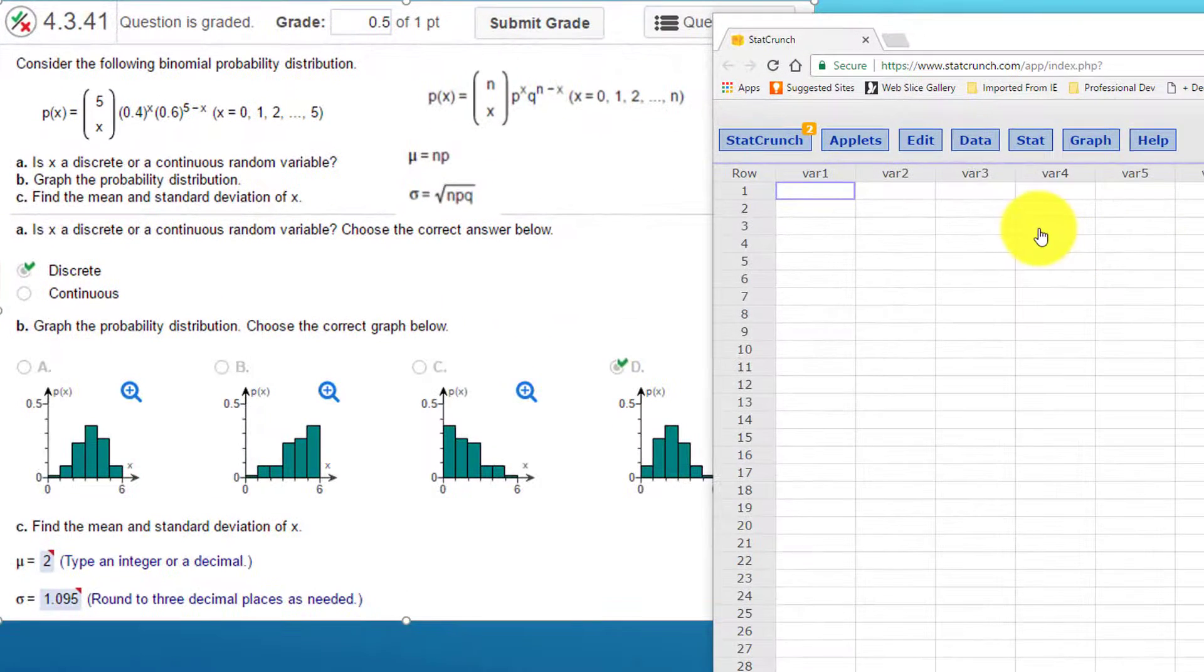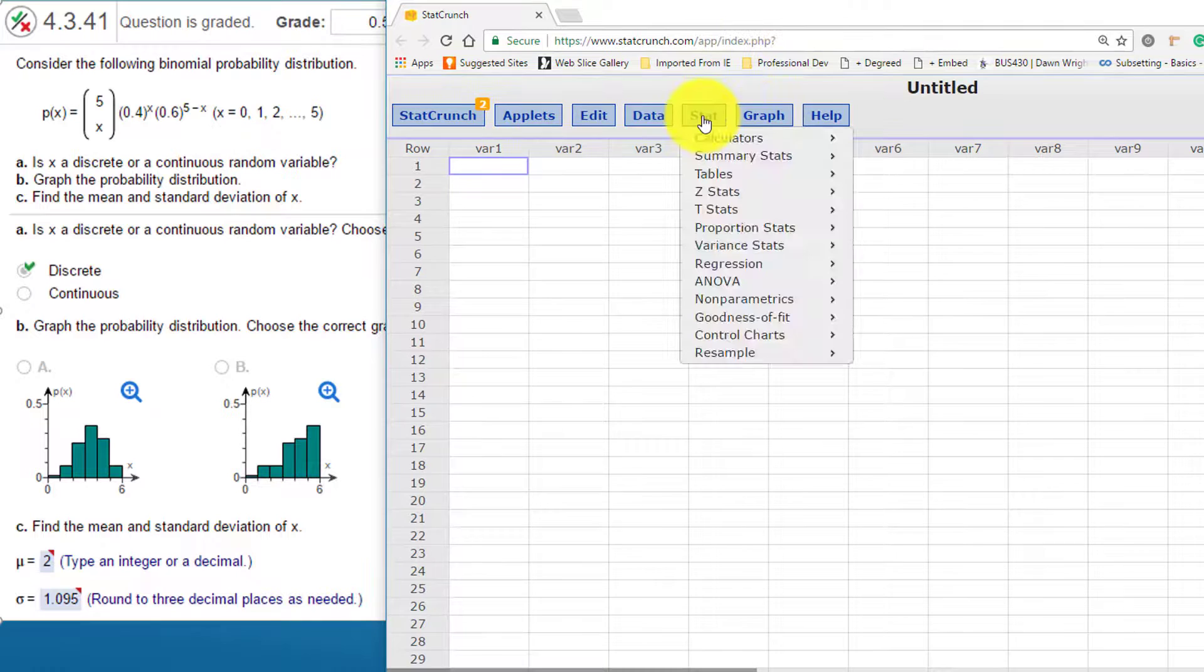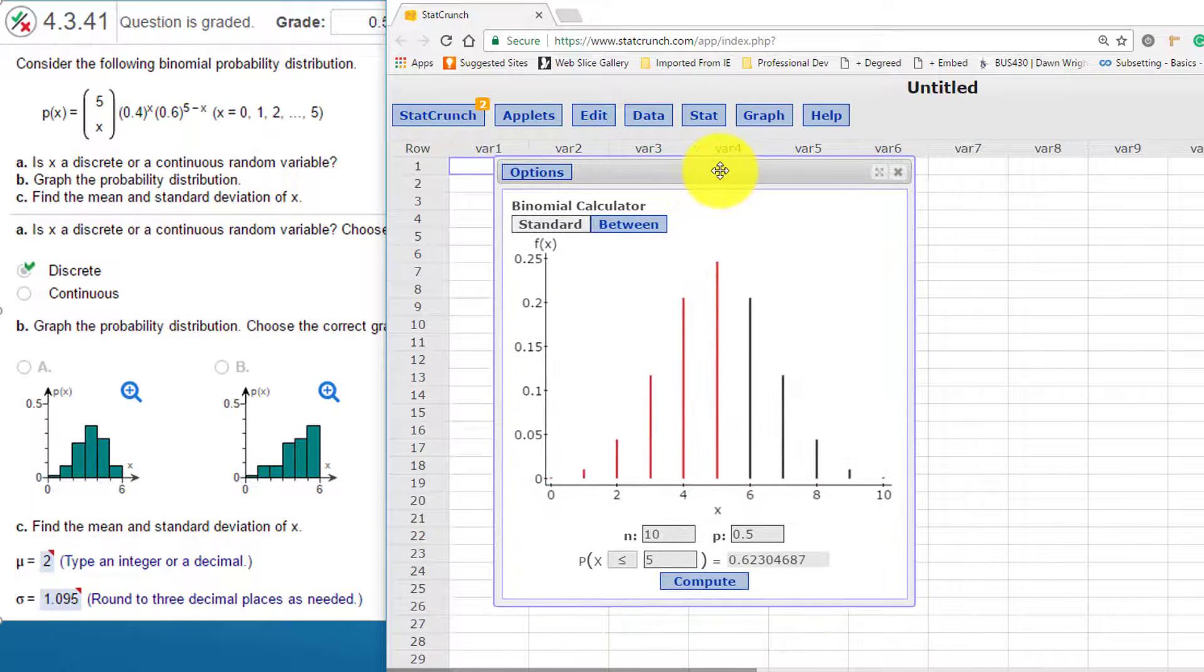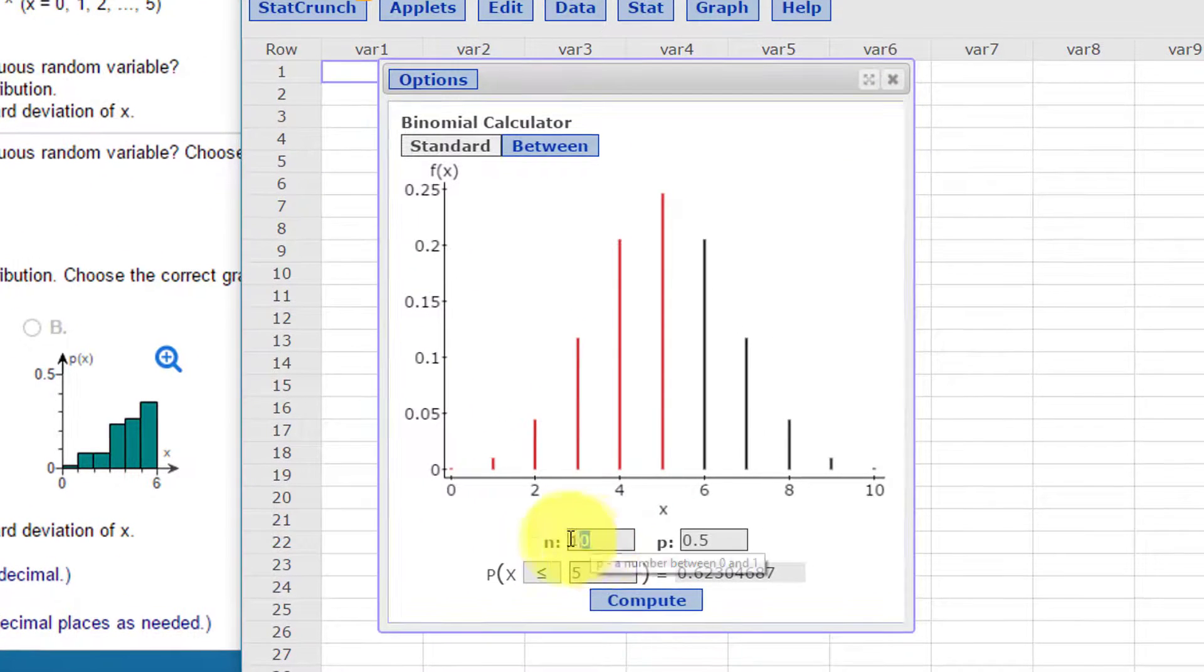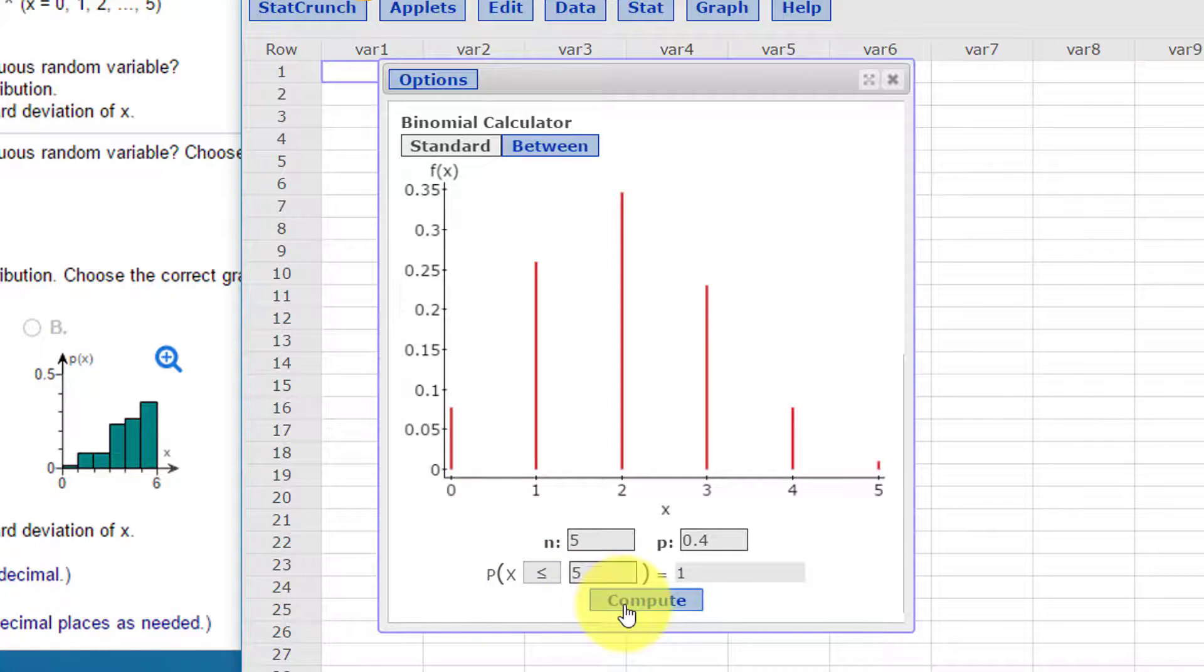Okay, I've got StatCrunch open, and I'm going to bring it over a little bit in the center. And we're going to go to Stat, Calculators, Binomial, and it brings up the binomial calculator. And it has an n of 10. We want an n of 5. And our p value is 0.4. I'm just going to leave the 5 in this area for a second. Click on Compute,